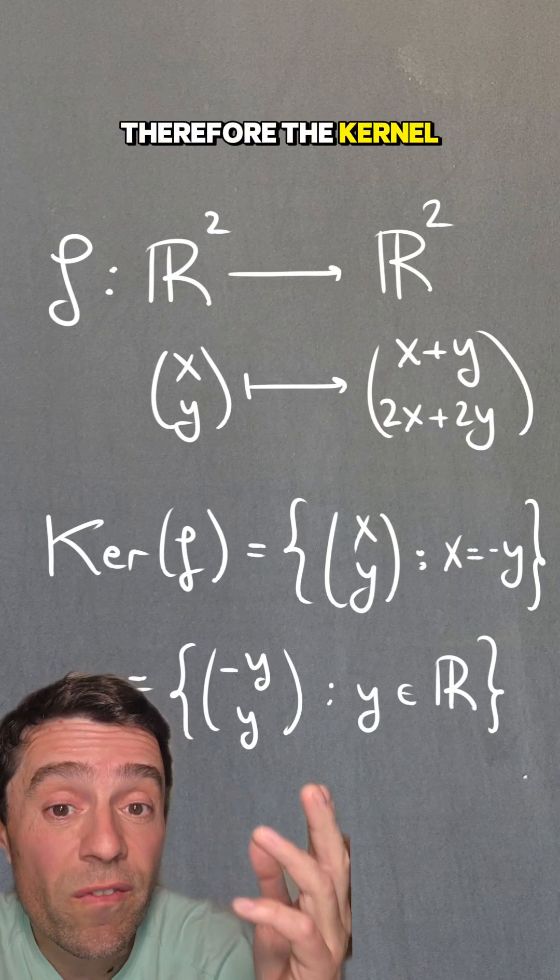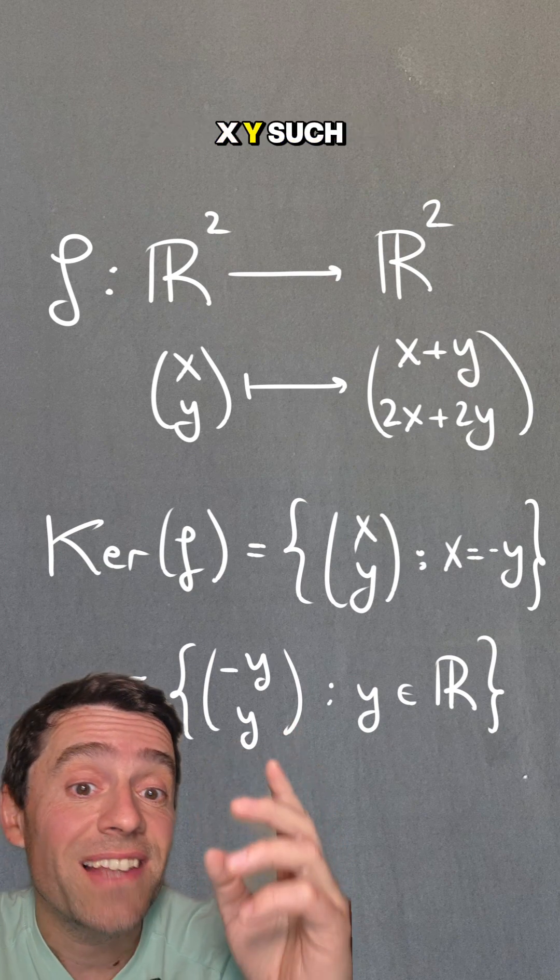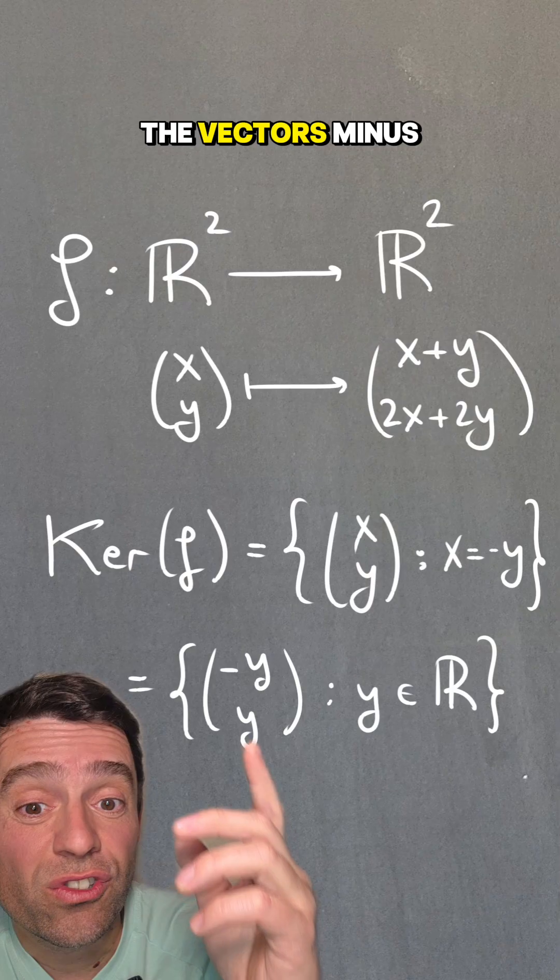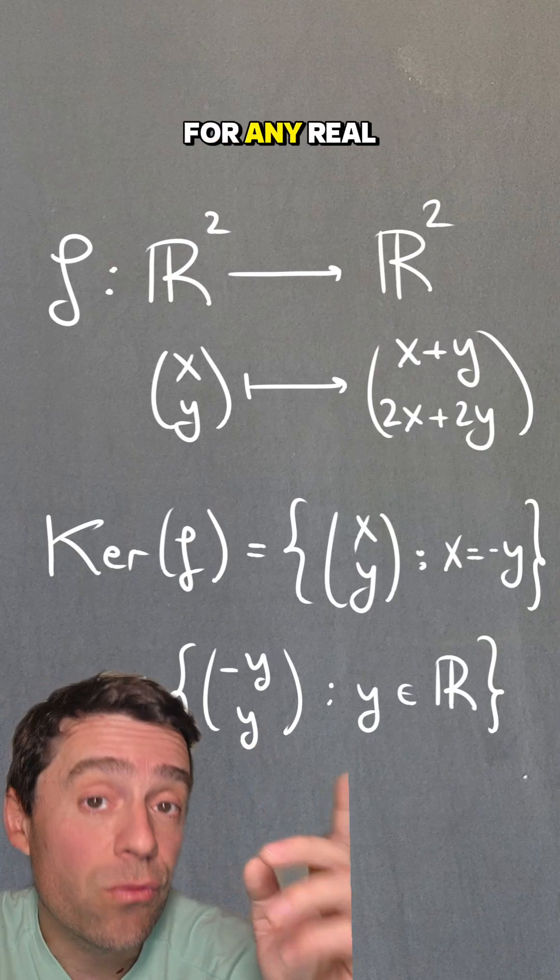Therefore, the kernel of the map are exactly those vectors (x,y) such that x is equal to -y. So those are the vectors (-y,y) for any real number y.